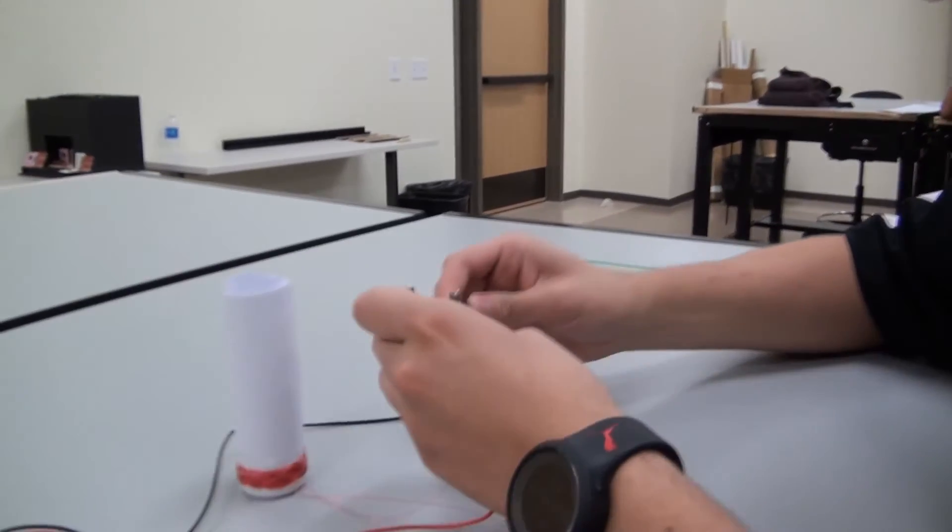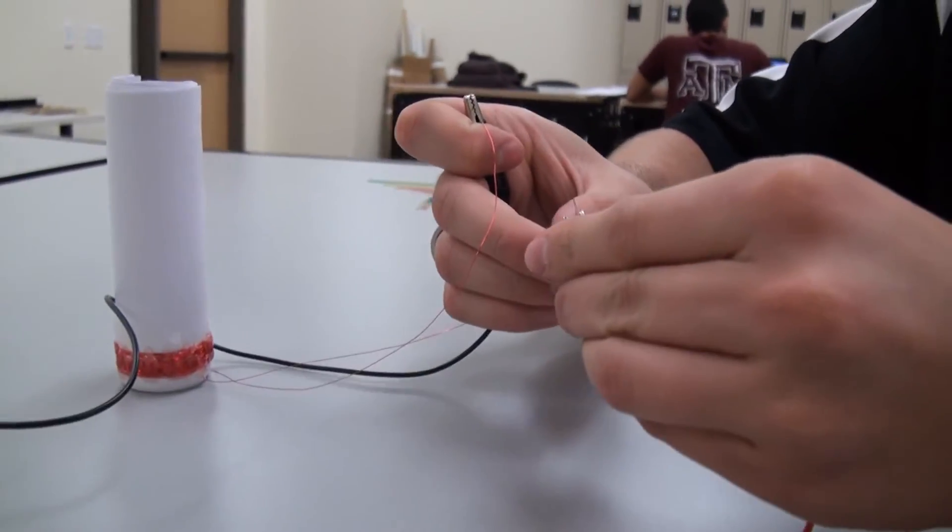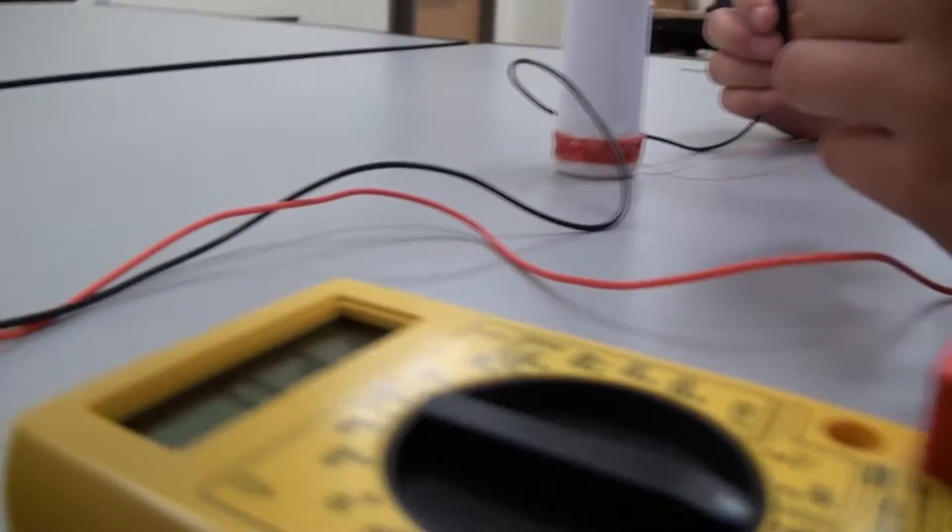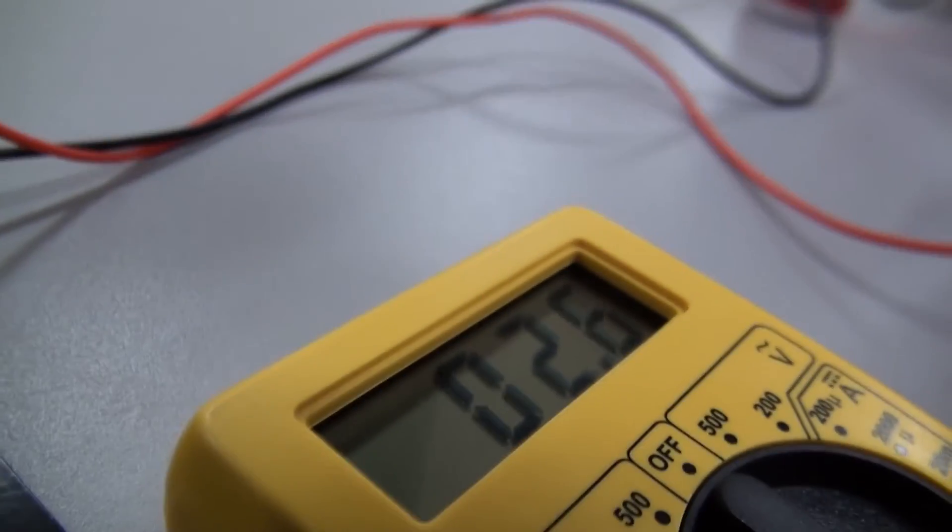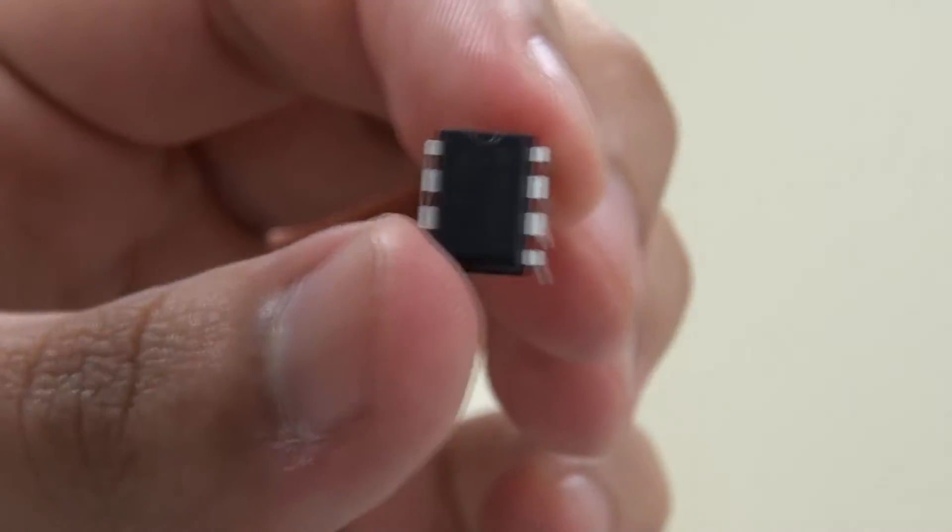Now that we have the voice coil, what we're going to do is measure the resistance. So as you can see, this is about a 2.5 to 2 ohm speaker, which makes it compatible with our amplifier.